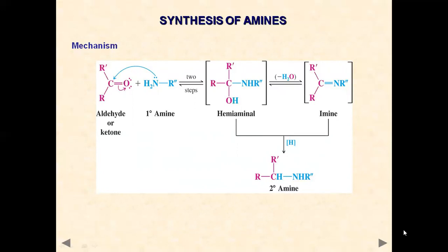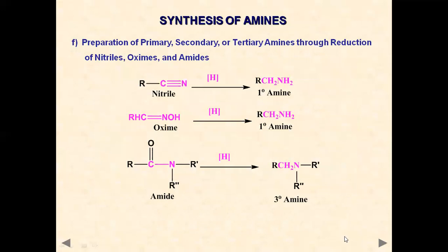We can also synthesize primary, secondary, or tertiary amines through reduction of nitrile, oxime, and amides. A nitrile has a cyano group attached to an alkyl chain; an oxime has C=N–OH; and an amide has C(=O)–NH2. On reduction with a strong reducing agent like lithium aluminum hydride, we can synthesize the corresponding amines.